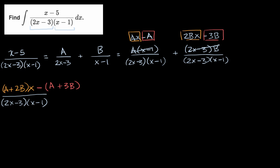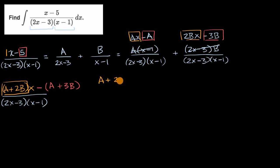Now we can see the pattern. Since the denominators match, the numerator must equal x minus five. So the coefficient on x — which is (A plus two B) — must equal one. And the quantity we're subtracting — (A plus three B) — must equal five. This gives us a system of two equations: A plus two B equals one, and A plus three B equals five.